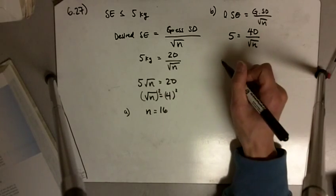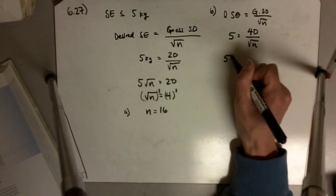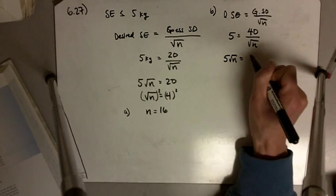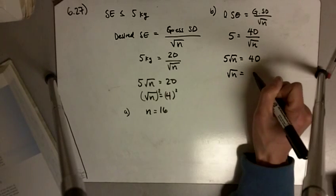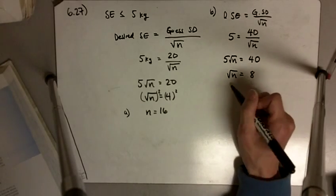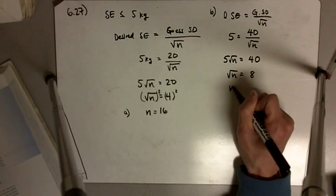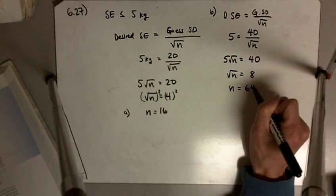Let me multiply both sides by the square root of n, we get 5 times the square root of n is equal to 40. Divide both sides by 5, we get the square root of n is equal to 8, and square both sides, and we get n is equal to 64.